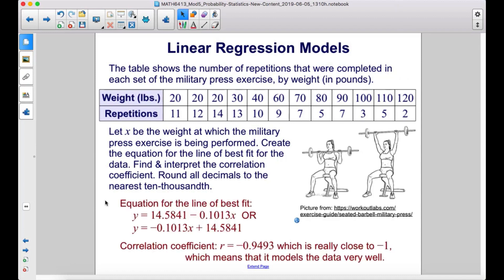The equation for the line of best fit is y = 14.5841 - 0.1013x, or you could switch the order, y = -0.1013x + 14.5841. The correlation coefficient r = -0.9493, which is really close to -1, which means that it models the data very well.